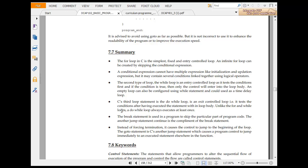Second type of loop is while loop, which has the condition first and if the condition is true then only do the things. C's third loop generator is do while loop, is an exit control loop.